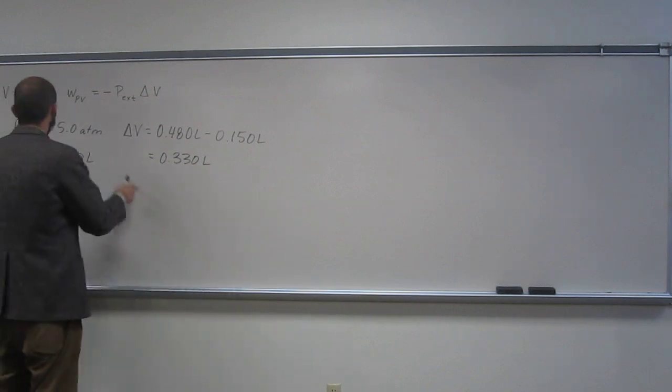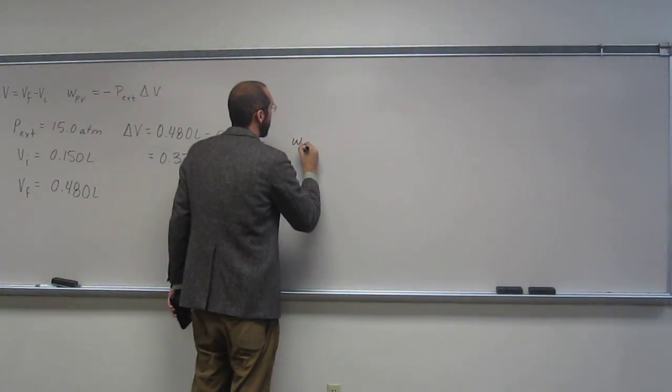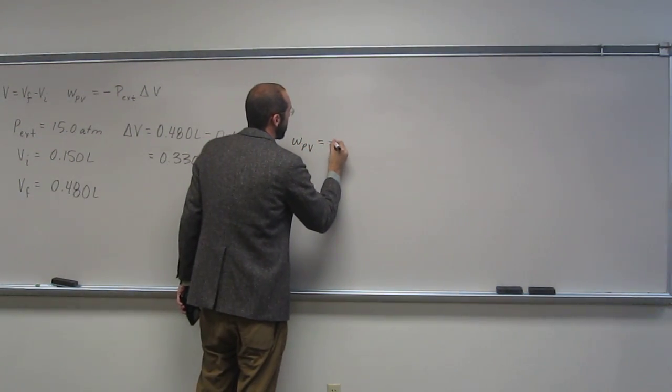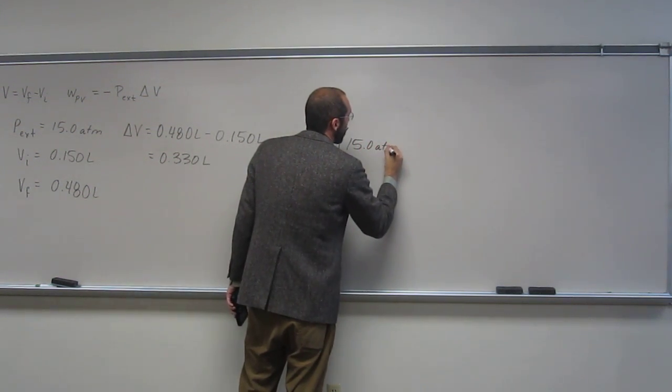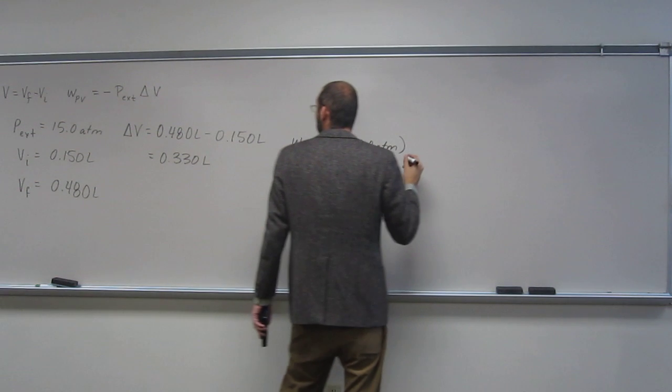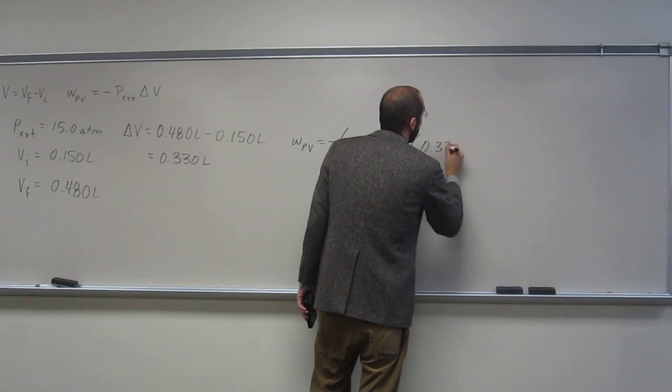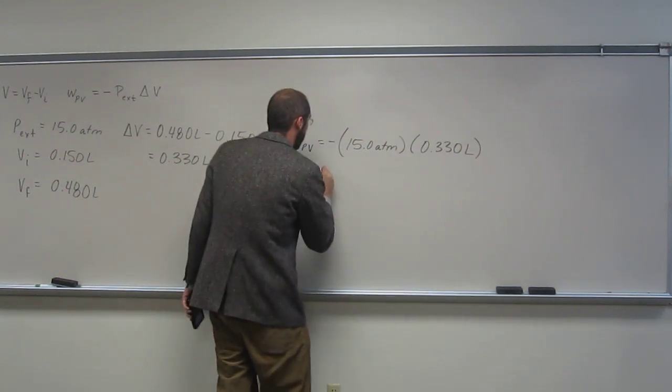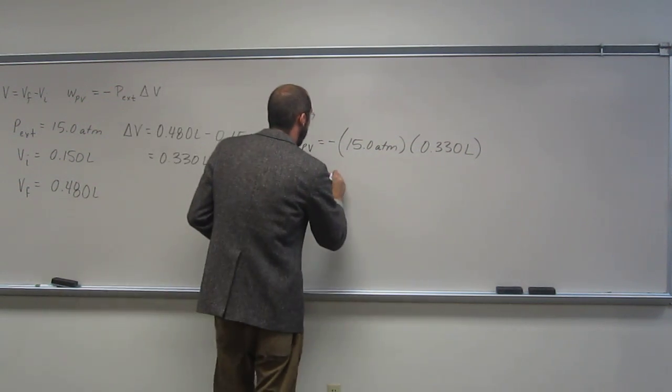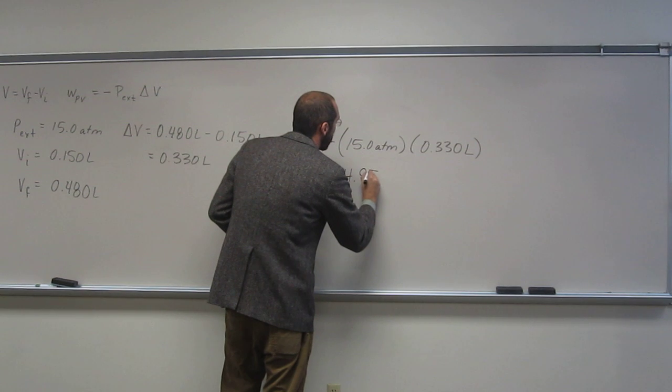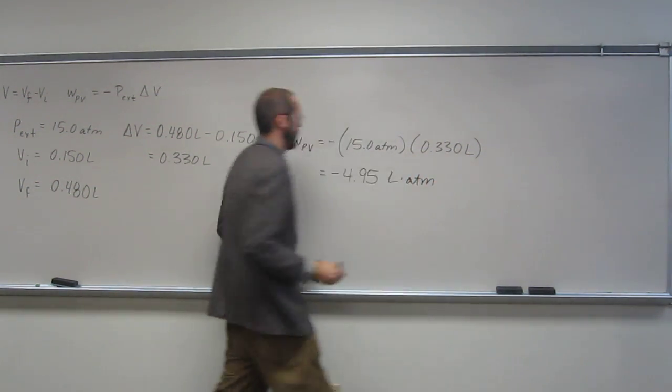And then, so it gives us the external pressure, so all we've got to do now is figure out the work. So the negative external pressure, 15.0 atmospheres, times the change in volume, which is 0.330 liters. So I got negative 4.95 liter atmospheres. What did you guys get?